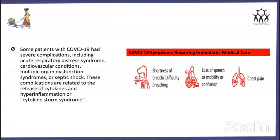Some patients with COVID-19 had severe complications including acute respiratory distress syndrome, cardiovascular conditions, multiple organ dysfunction syndrome, or septic shock. These complications are related to the release of cytokines and hyper-inflammation, or cytokine storm syndrome. Symptoms requiring immediate medical care include shortness of breath, difficulty in breathing, loss of speech or mobility, mental confusion, and chest pain.